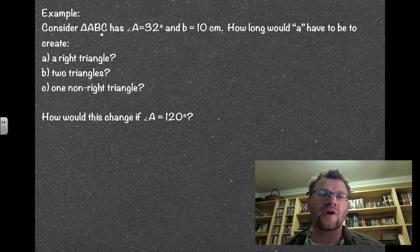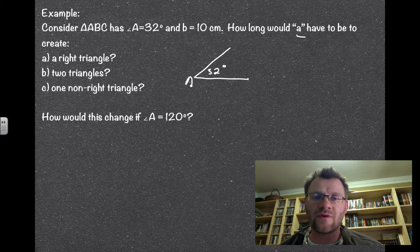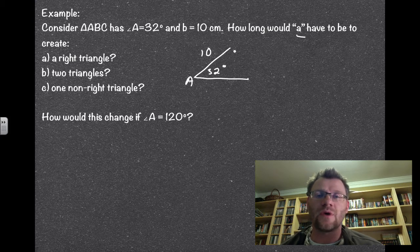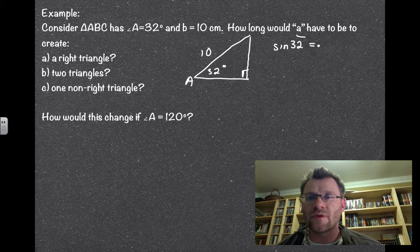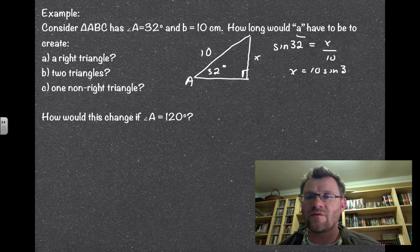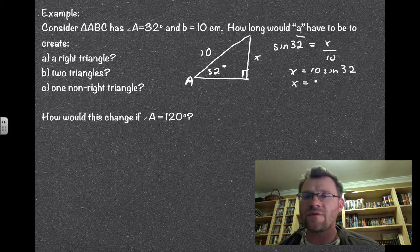Here's our second example. Consider triangle ABC with angle A equal to 32 degrees and side B equal to 10 centimeters. How long must side A be to create: A) a right triangle, B) two triangles, or C) one non-right triangle? Drawing a diagram helps. For a right triangle, sine 32 equals X over 10, so X equals 10 times sine 32, giving 5.3 centimeters. To make one right triangle, side A must be 5.3 centimeters.